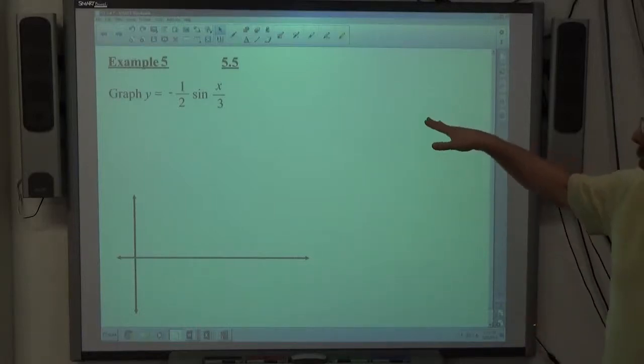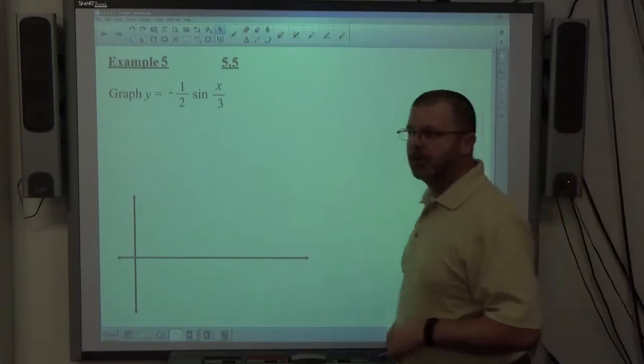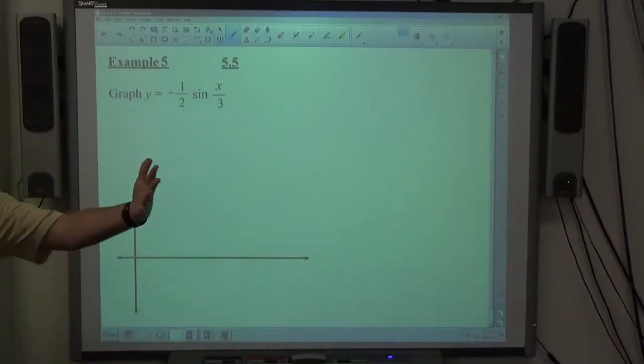Okay, our final example today has both a B and a C value that aren't 1, so we have to deal with both an amplitude and a period change.